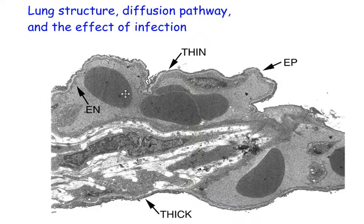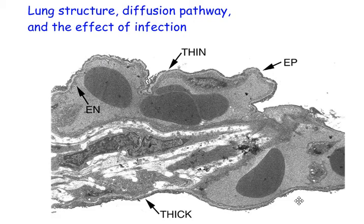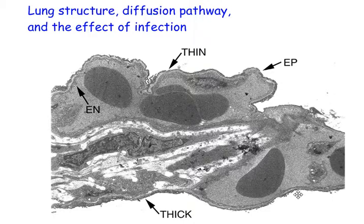So the diffusion pathway is from the top across here and from the bottom across here — just that distance, a very small distance, which means diffusion is efficient because the distance is so small.